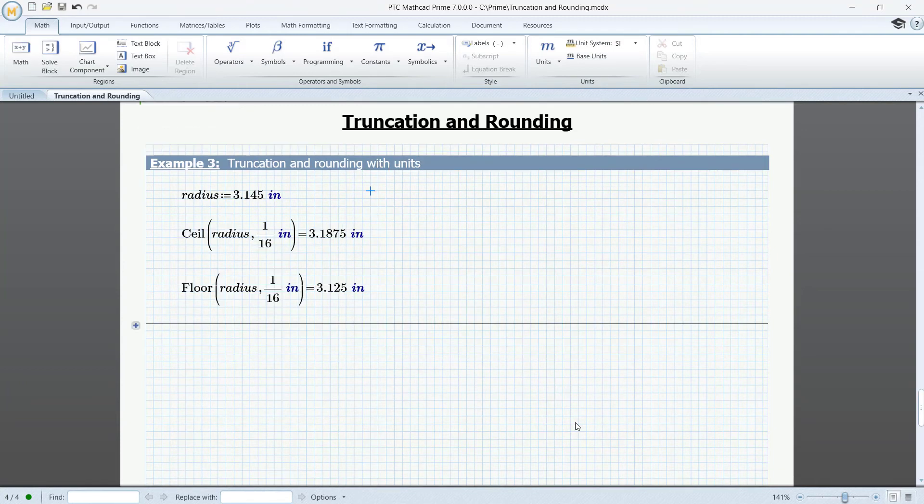Now, let's assume that a calculation gives the radius 3.145 inches. And for manufacturing purposes, we want to round it up or down to the next or previous sixteenth of an inch.